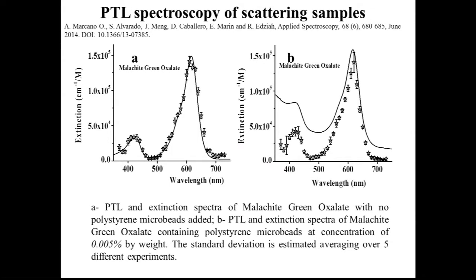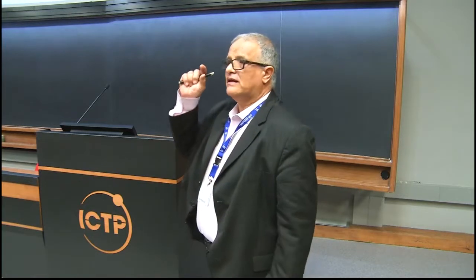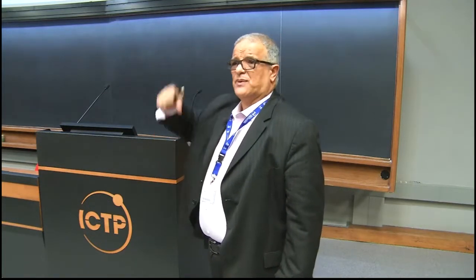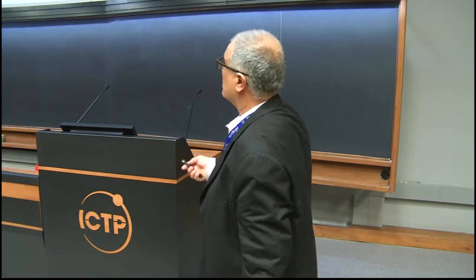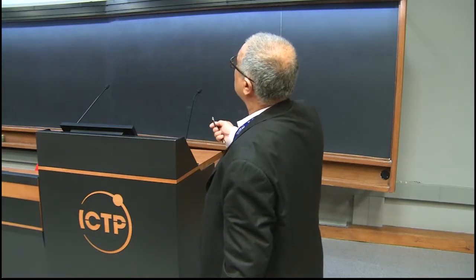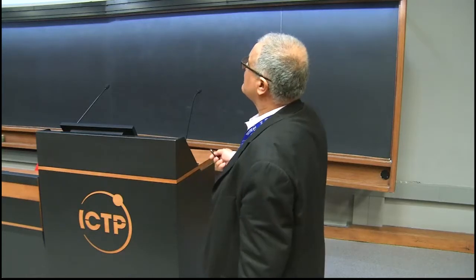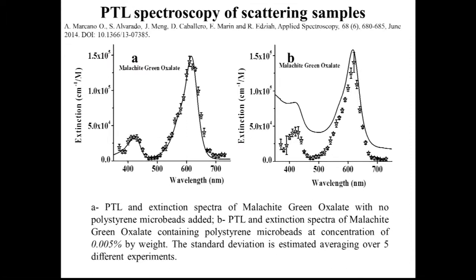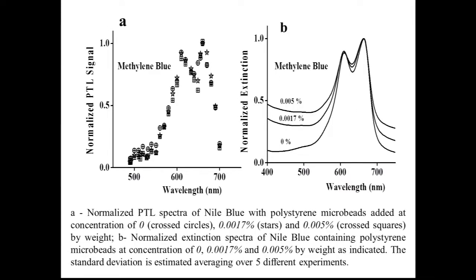Another experiment done with white light is about scattering or turbid samples. We again use malachite green and get very nice coincidence. Then I add plastic latex microspheres of about one micron size and start increasing the scattering. When you increase the scattering, the absorbance becomes bigger in normal transmission measurements — you can see the absorbance is bigger. But the photothermal spectrum is not affected — it still reproduces the same result as without scattering.